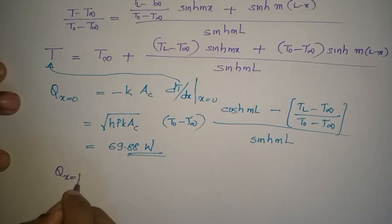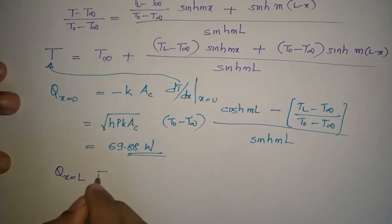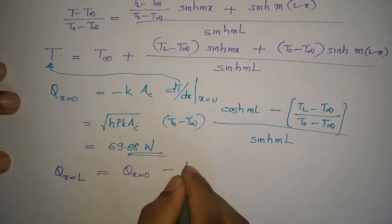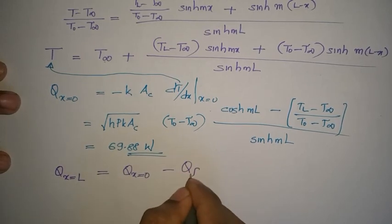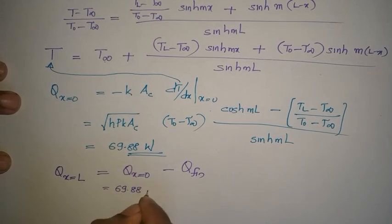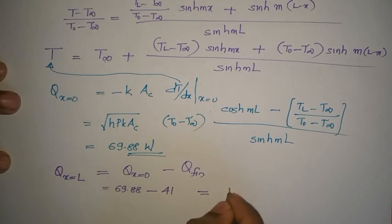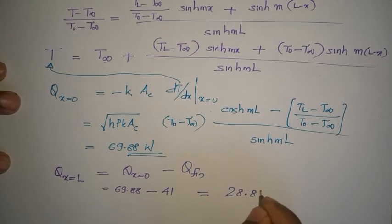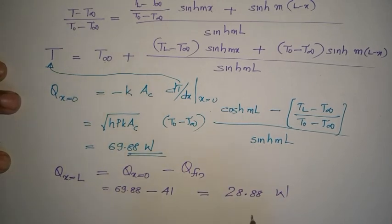Using the energy balance, Q at x=L = Q(x=0) − Q_fin = 69.88 − 41 = 28.88 watts. This is the final answer for the second part of the question.